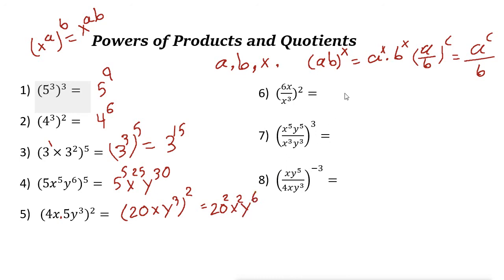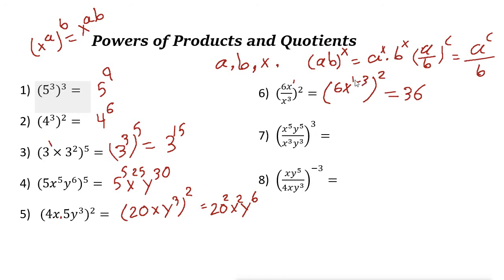Next example: (6x / x^3)^2. Using the division rule, subtract the powers inside the parentheses: x^1 divided by x^3 gives x^(1−3) = x^(−2). So inside we have 6x^(−2). Then raising to the power of 2: 6^2 is 36, and x^(−2) to the power of 2 is x^(−4). The result is 36x^(−4).